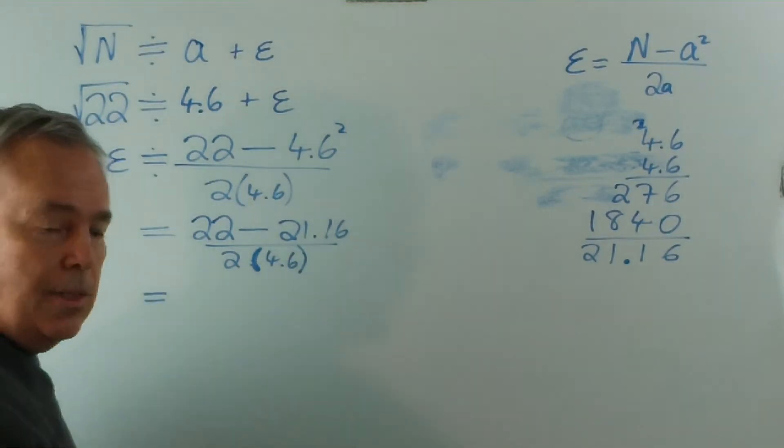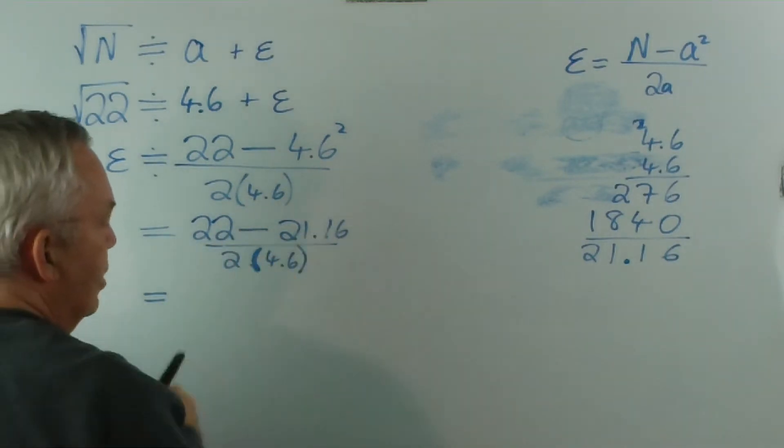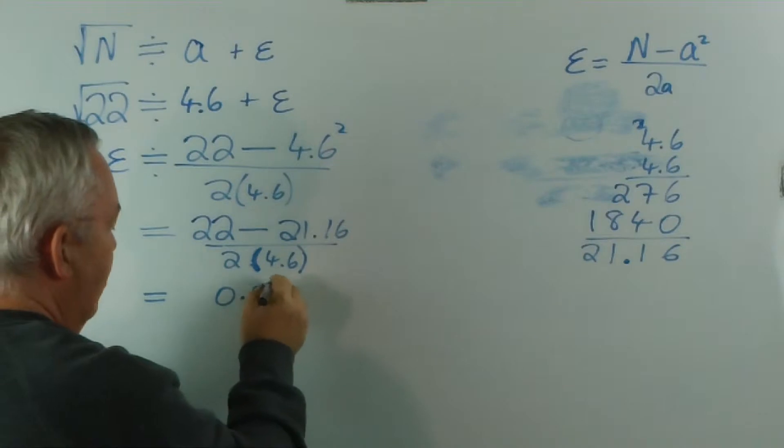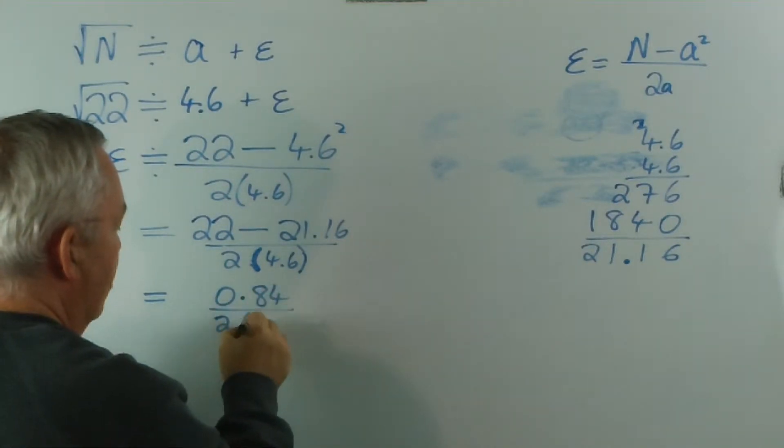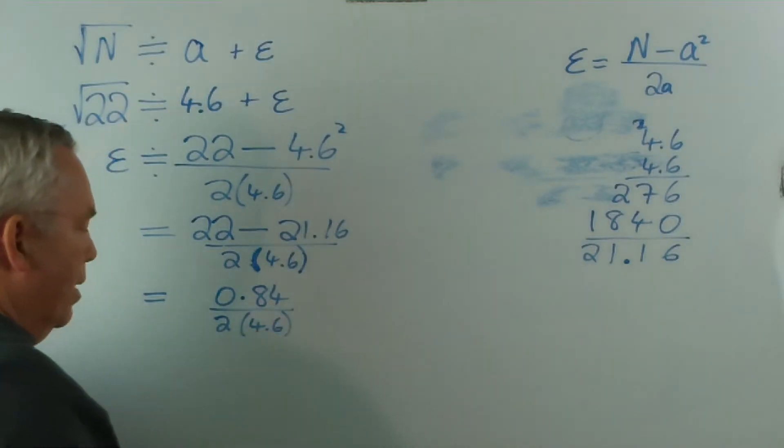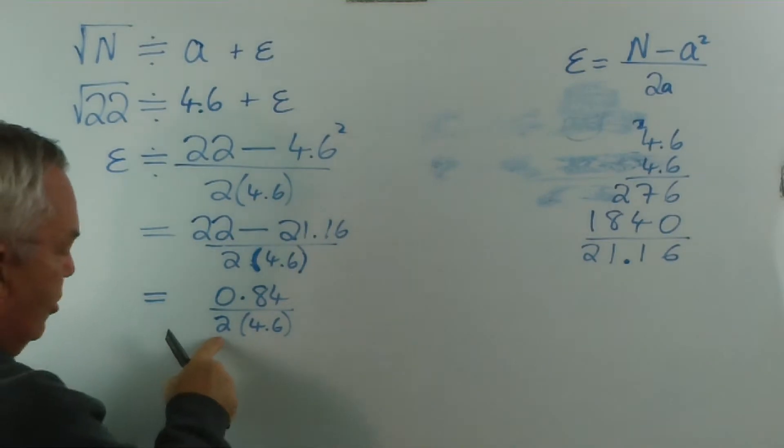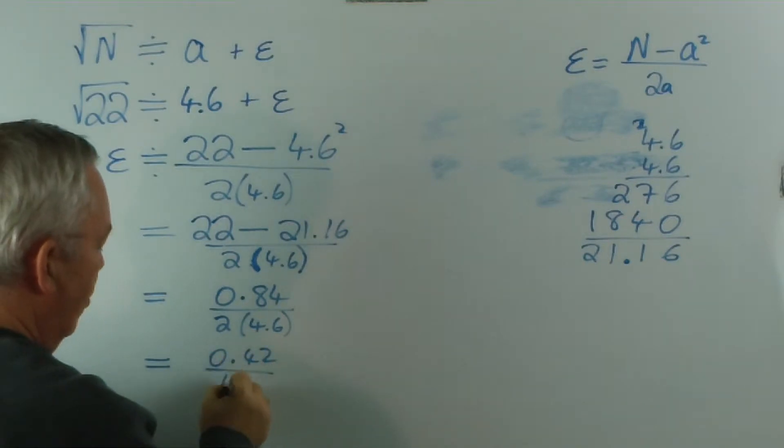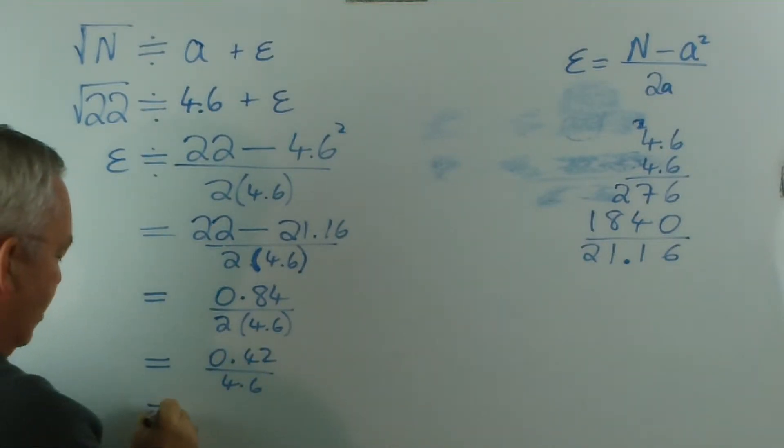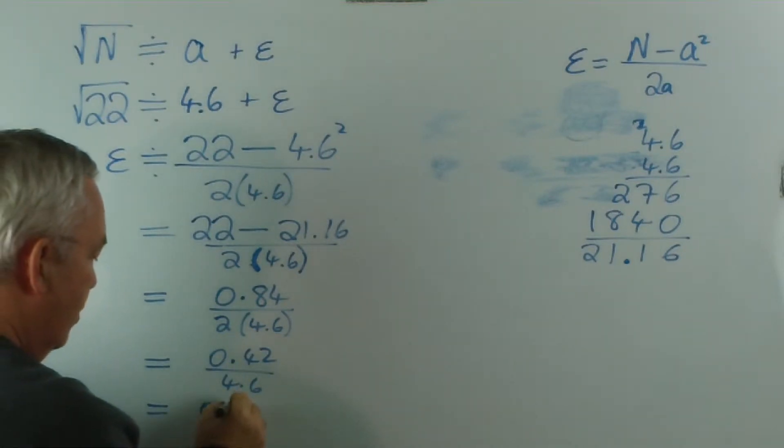Well, it was fairly close to 22. If you did it on your calculator, that's what you should have got. So we're getting 22 minus 21.16, divided by 2 times 4.6. Let's calculate this. 22 minus 21.16 is 0.84, divided by 2 times 4.6. I'm going to have to simplify this fraction and divide to get a decimal. So I want to make this as simple as I can. I'm going to divide this 2 into the top, get 0.42 over 4.6.